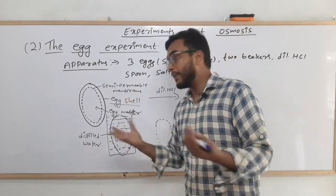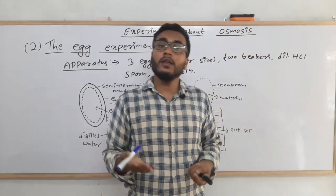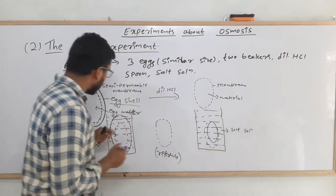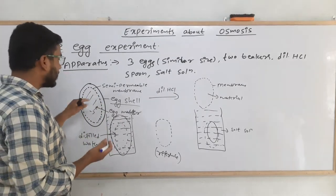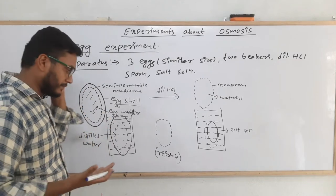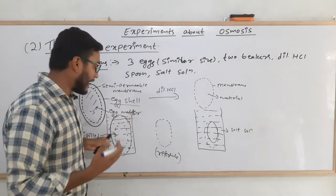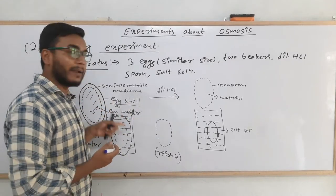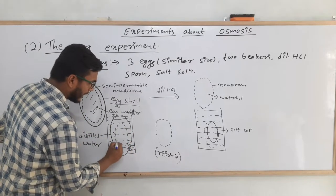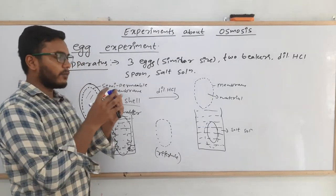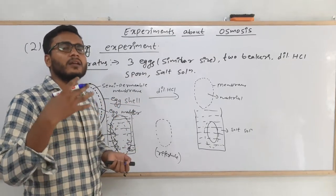The reason for these observations is osmosis. The egg matter inside has some density — it is a solution. When kept in distilled water, the distilled water is more dilute compared to the inside material. So water molecules from outside start to enter the egg through the semi-permeable membrane, and as a result the size of the egg slowly increases. That is why it takes some time.